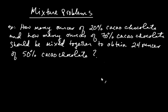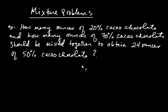In this video, we're going to talk about what are called mixture problems. Here's an example: how many ounces of 20% cacao chocolate and how many ounces of 70% cacao chocolate should be mixed together to obtain 24 ounces of 50% cacao chocolate?